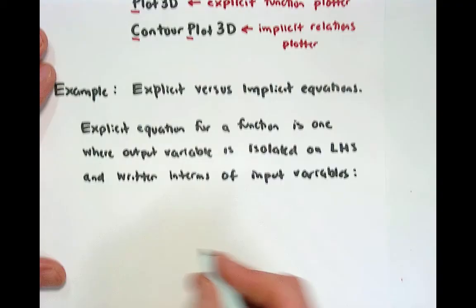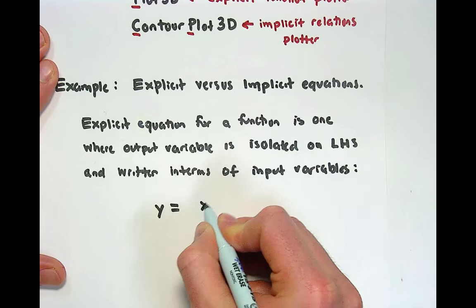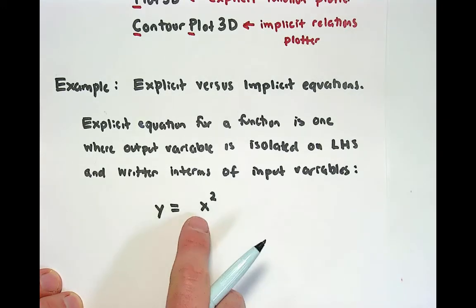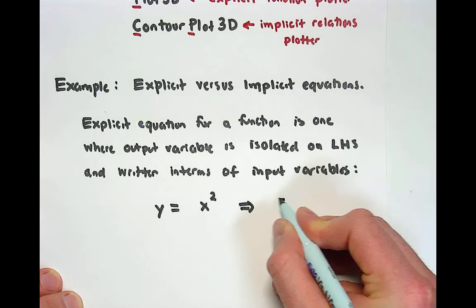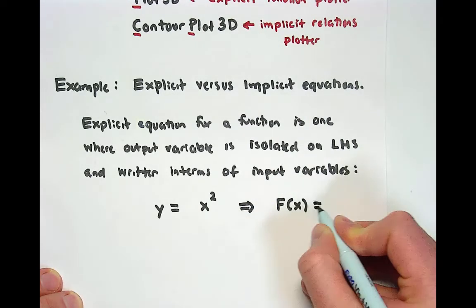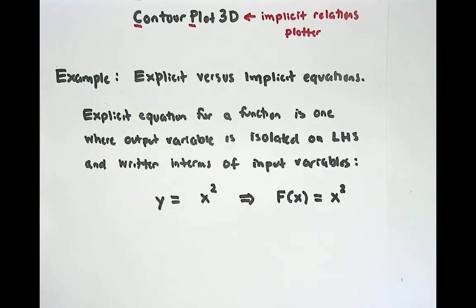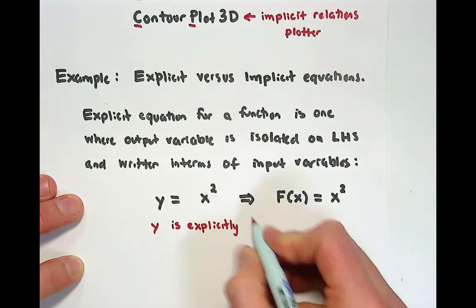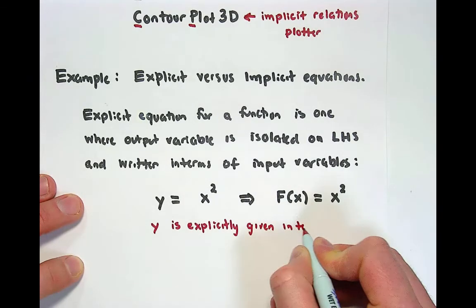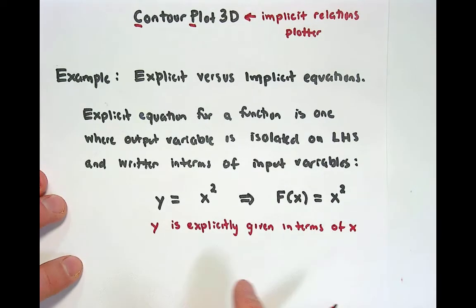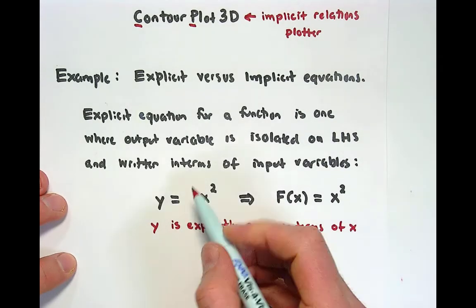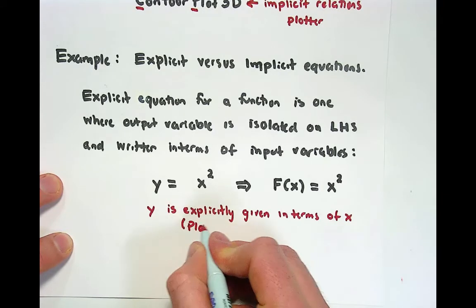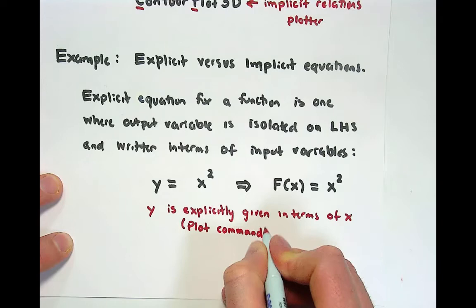So an example of this would be the equation function y equals x squared. This is an explicit representation of the output in terms of the input. And we used function notation to say we could actually write the output of this function strictly in terms of the input. And this was explicit because y is explicitly given in terms of x. When you have an explicit representation of a function, you want to think about the plot command. This goes into the plot command in Mathematica.